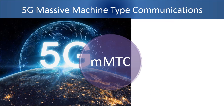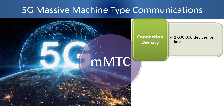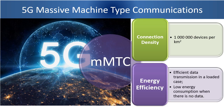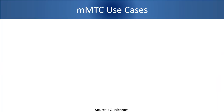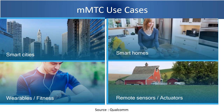Let us summarize 5G new radio key performance requirements to support MMTC. The first one is connection density: ITU has a vision to support up to 10 lakh devices per square kilometer. The second one is energy efficiency: the base station or the 5G network has to support efficient data transmission in a loaded case and low energy consumption when there is no data. The possible use cases of MMTC are smart cities, wearable or fitness devices, smart homes, remote sensors and actuators in agricultural fields, and so on.